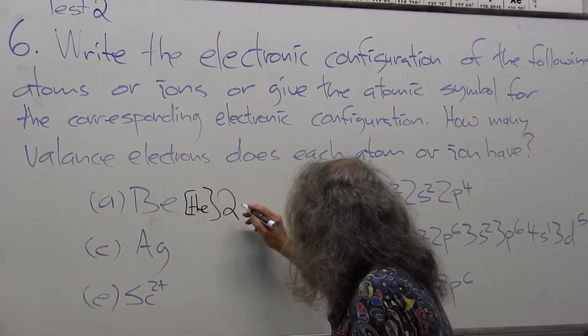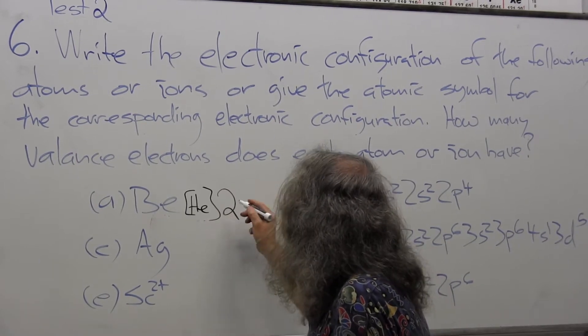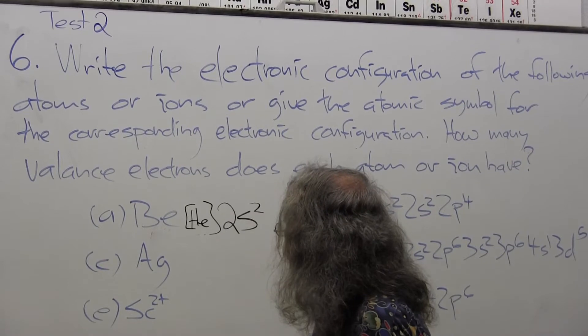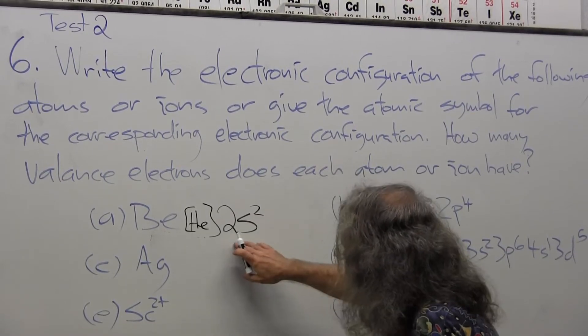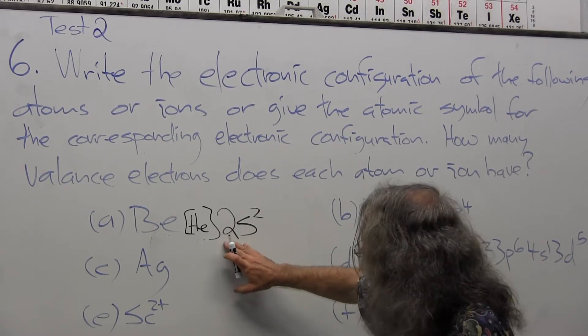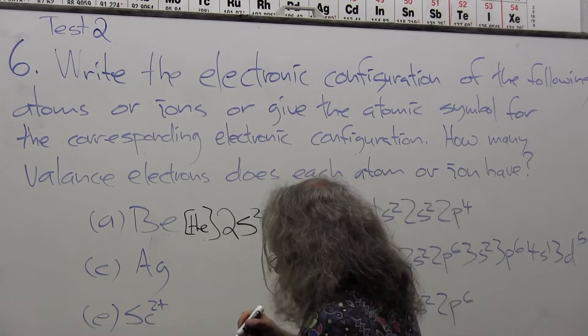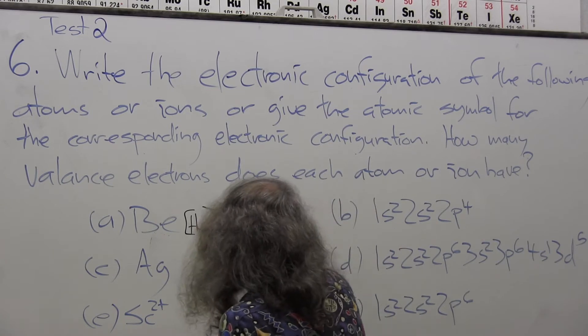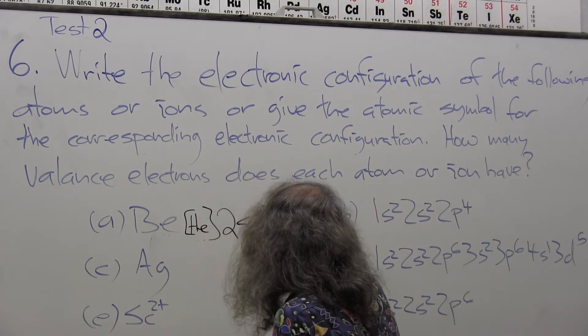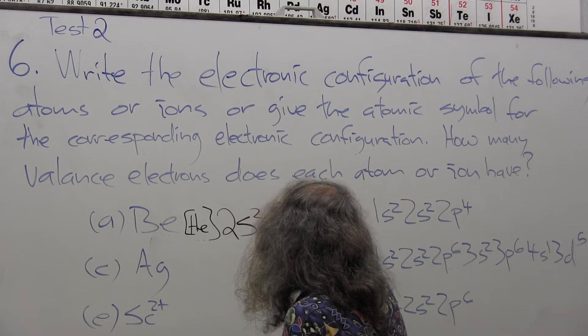The valence electrons—because I'm now in the second row, the principal quantum number is two—I've got s electrons and I have two of them. So this particular notation emphasizes the valence electrons. Obviously, there exist two valence e's.